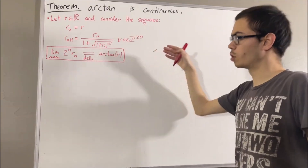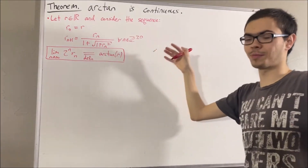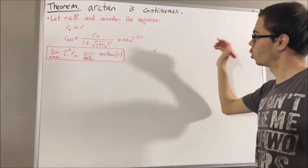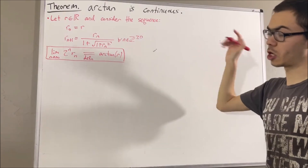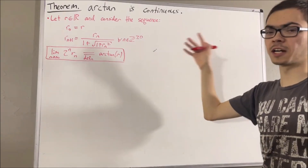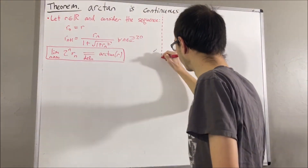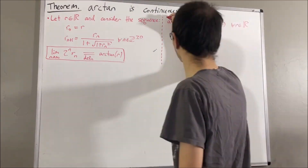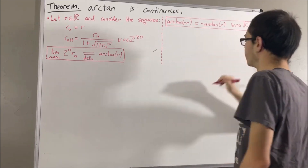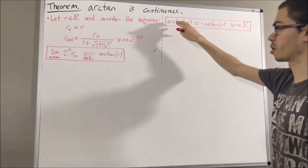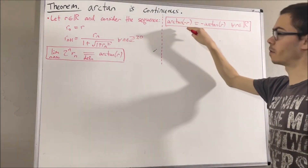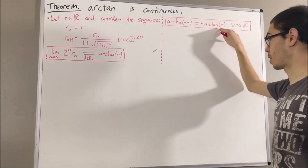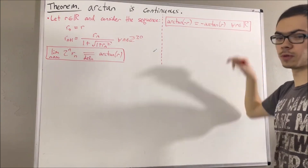From here, we proved several properties of arctangent, one of which is that arctangent is an odd function. That is, the arctangent of negative R is equal to the negative of arctangent of R, for all real numbers R.